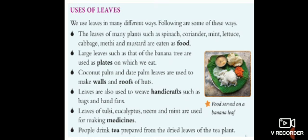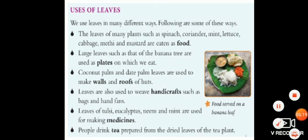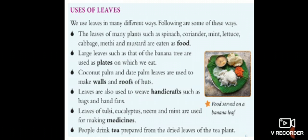Leaves are used to weave handicrafts such as bags and fans. Leaves of tulsi, eucalyptus, neem, and mint are used for making medicines. People drink tea prepared from dried leaves of the tea plant. So the tea your parents drink is not just tea powder — it comes from tea leaves.